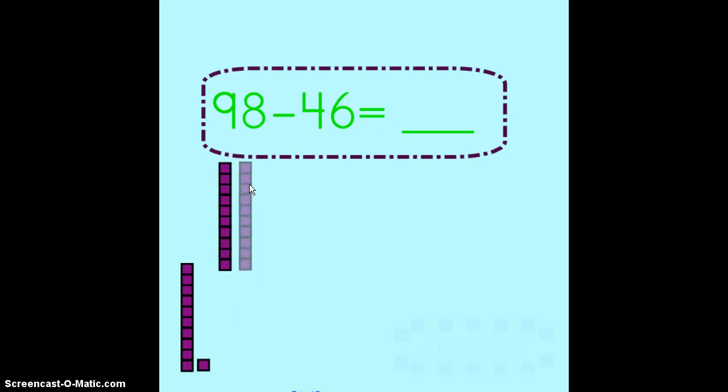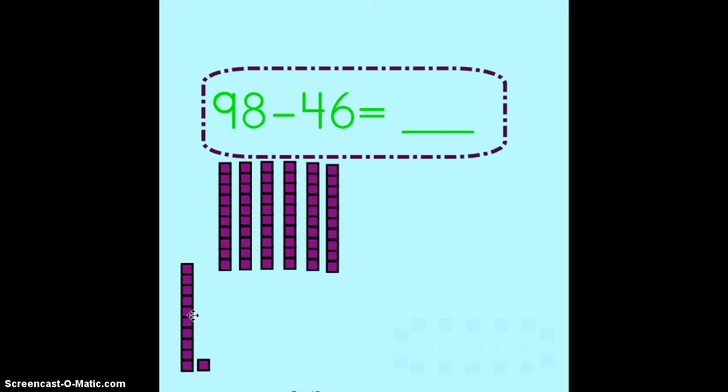One, two, three, four, five, six, seven, eight, nine tens. And one, two, three, four, five, six, seven, eight ones. I just built the number 98 which is my whole.